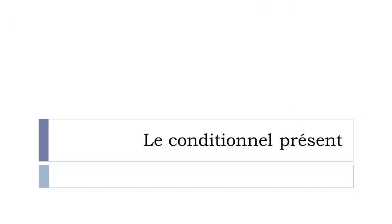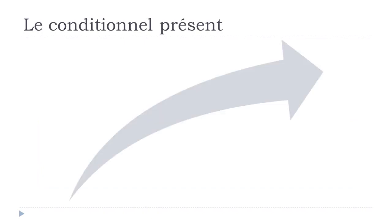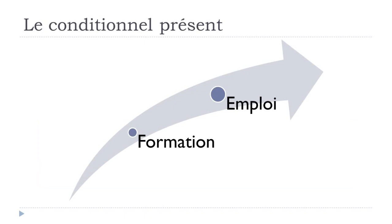Le Conditionnel Présent. Basically, the conditionnel is, as in English, this conditional form — 'would,' 'could.' We have different tenses for that, and the first one we'll see — the more classic tense — is the present form. In this lesson we'll see first La Formation, the way to build it, and then L'Emploi, when you should use this Conditionnel Présent form.